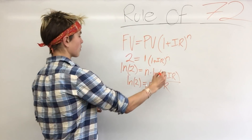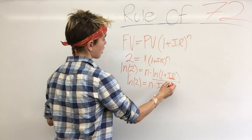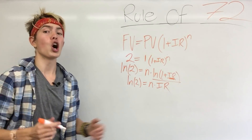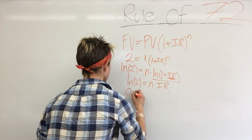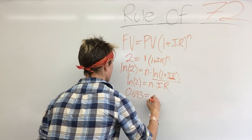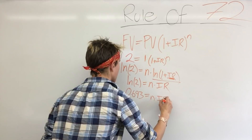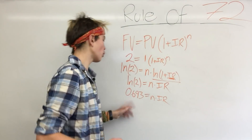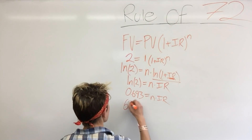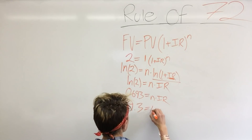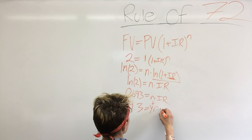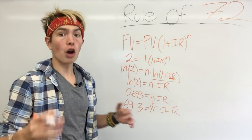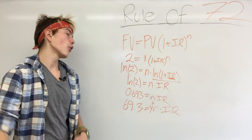That's the biggest step — as the interest rate approaches zero, the whole term approaches just the interest rate, which is a property of logs. The natural log of 2 gives us 0.693, which equals n times the interest rate. Because we want our interest rate as a percentage, we multiply both sides by 100 and get 69.3 equals years times the interest rate as a percentage.